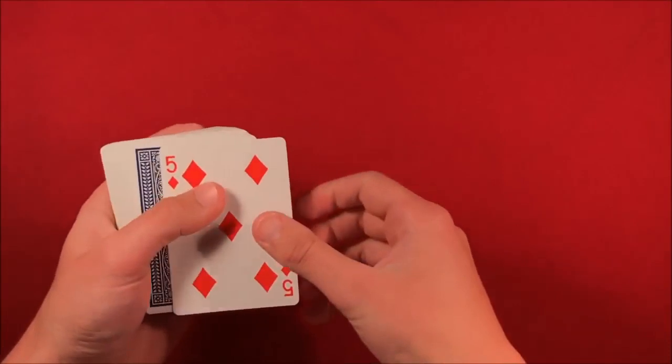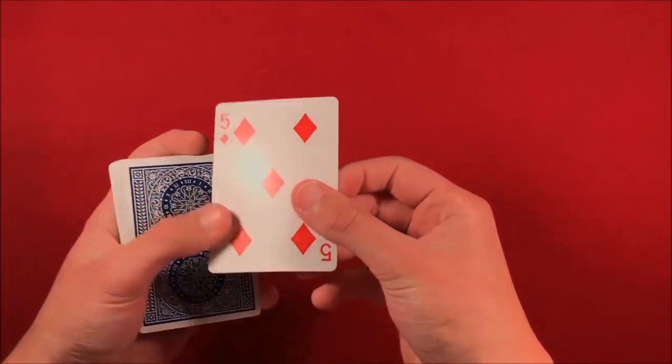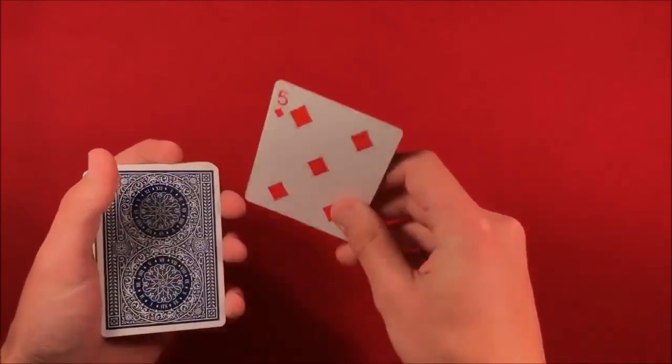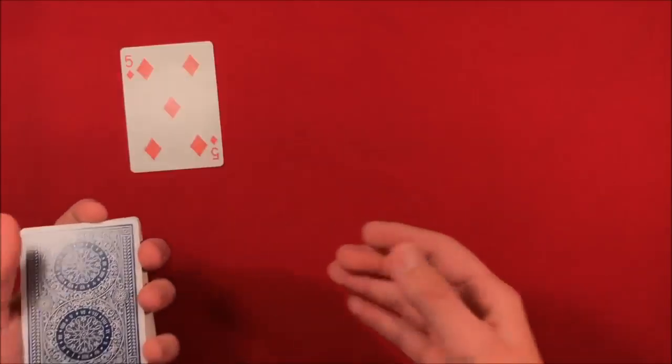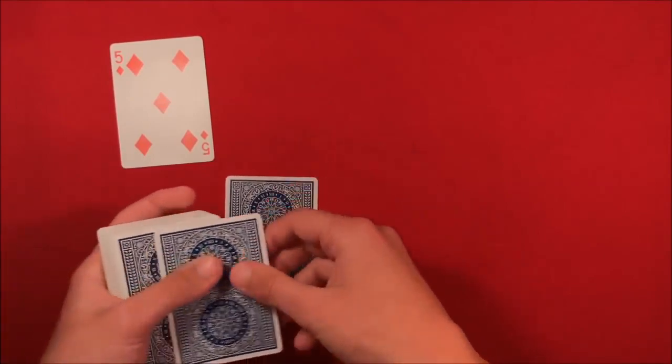So you say, you know what, well maybe this is going to be an indicator card telling me where in the deck your card actually is. So in this case, you tell the spectators you have a five, so you say, you know what, maybe your card is five cards down. So you take one, two, three, four.